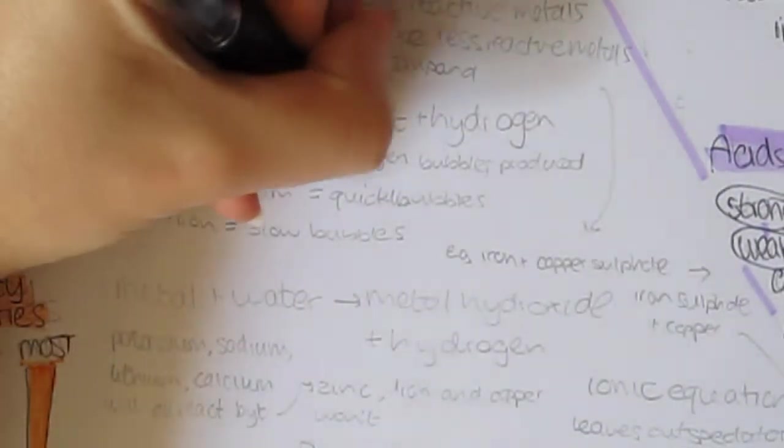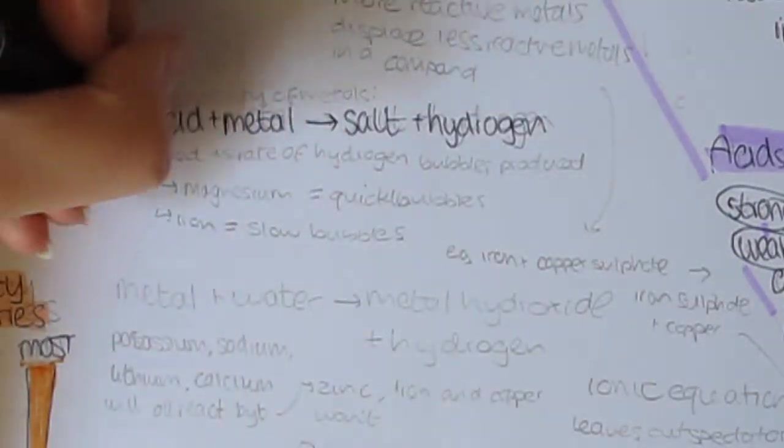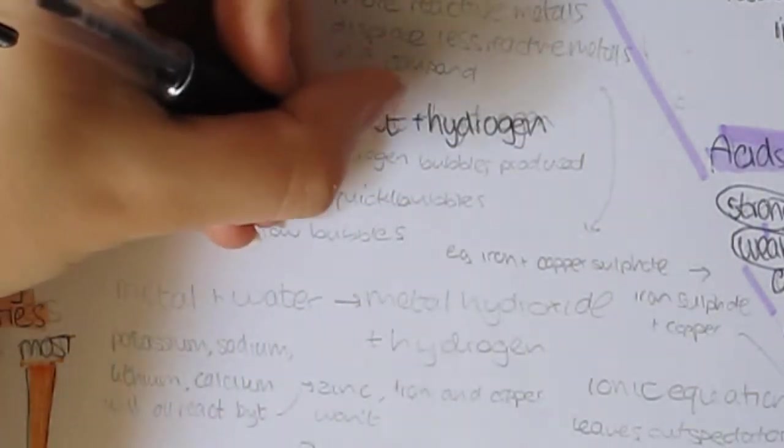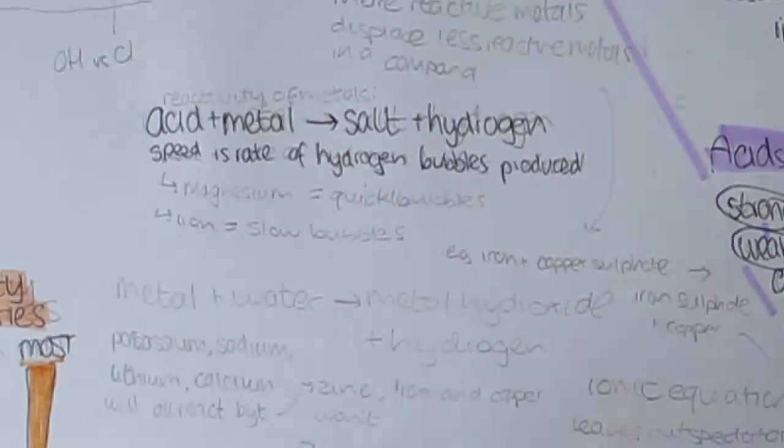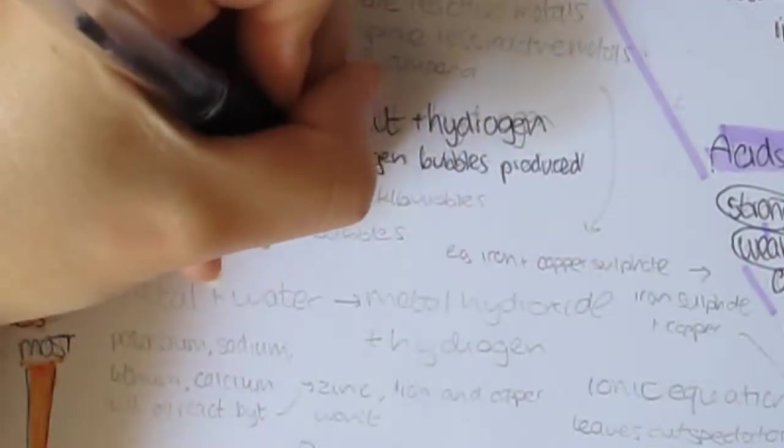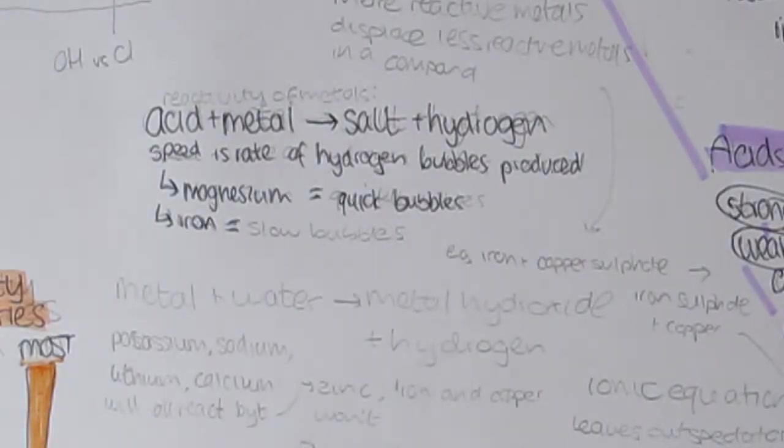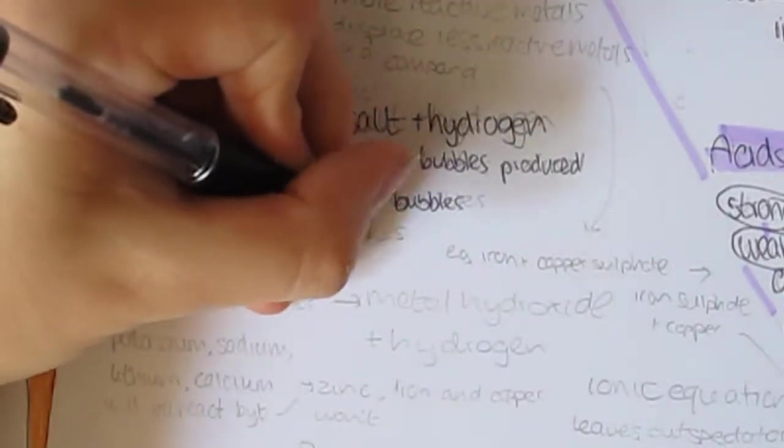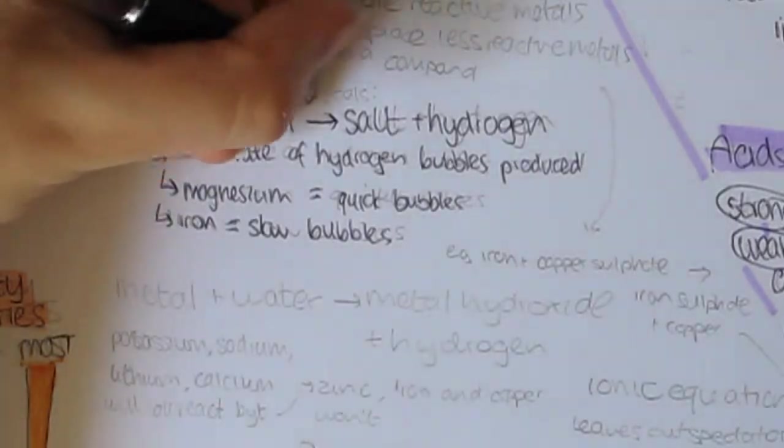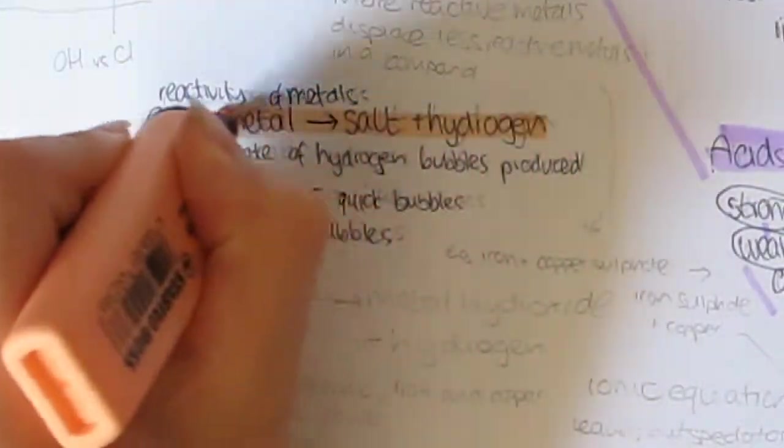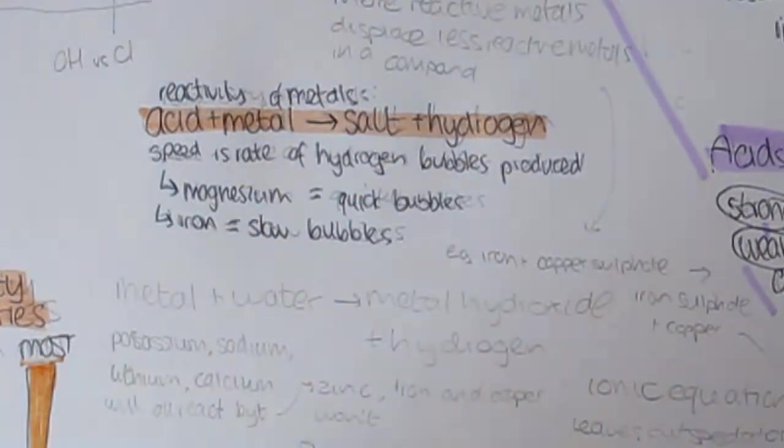Acid plus metal makes salt plus hydrogen. This reaction can be used to find the reactivity of metals. The speed being indicated by the rate of hydrogen bubbles being produced. For example, magnesium reacts vigorously and produces a lot of bubbles, but iron produces relatively few. You can use the burning splint test to confirm that hydrogen is formed in these reactions.